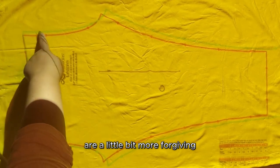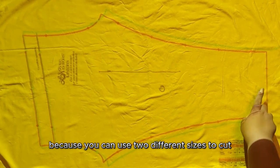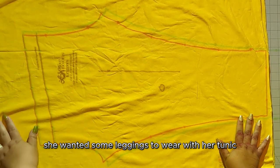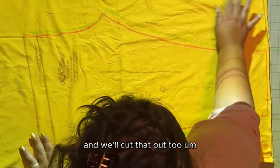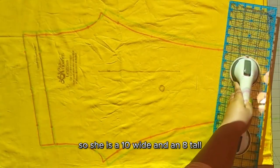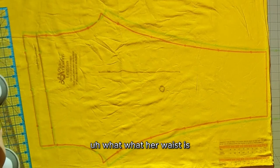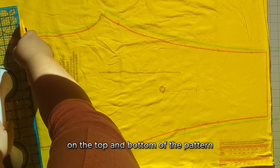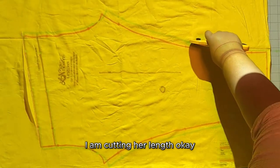Now kids patterns, I feel like are a little bit more forgiving when you are cutting them out because you can use two different sizes to cut instead of adding length, removing length, whatever. So like for my daughter here, she wanted some leggings to wear with her tunic that I had mentioned I was cutting out before. And we'll cut that out too. But this is her two sizes. So she is a 10 wide and an 8 tall, something like that. What her waist is, is a little bit bigger than her height, according to the size chart.